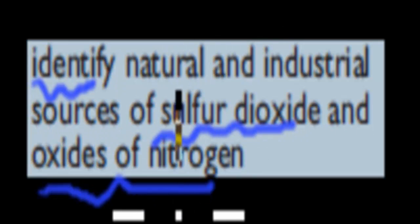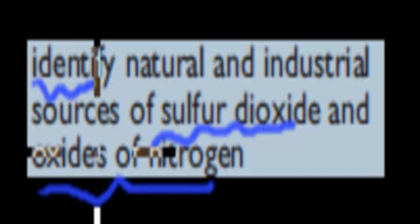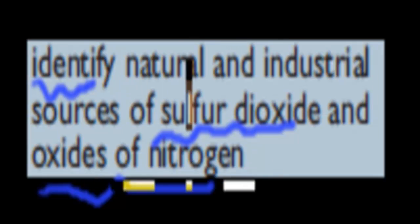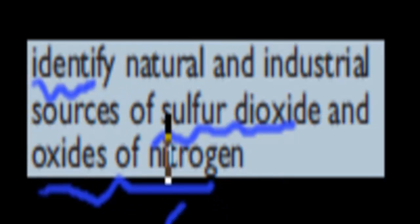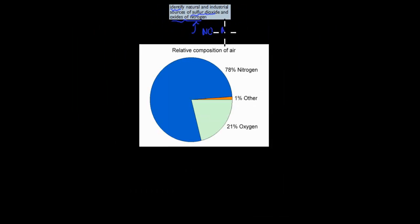For this stop point, 'identify' just means we need to name sources — both natural and industrial — where sulfur dioxide comes from, and where the oxides of nitrogen come from. There are two different oxides of nitrogen: NO and NO2.